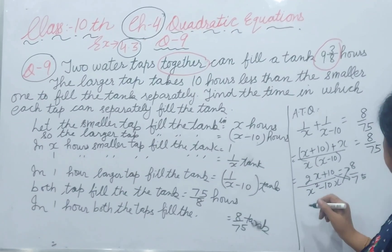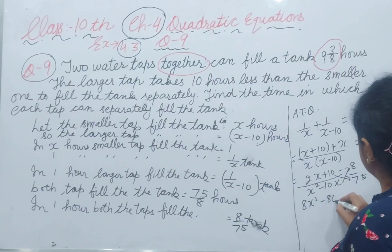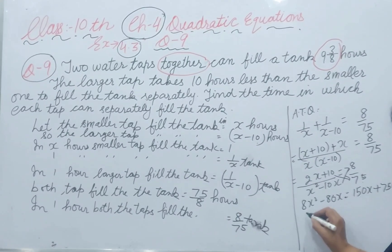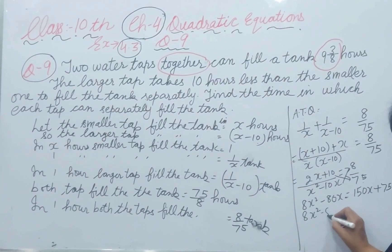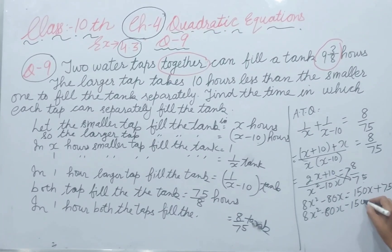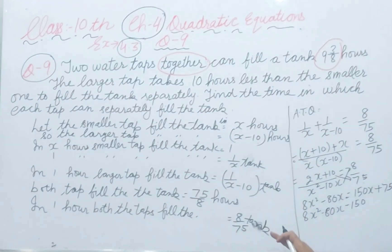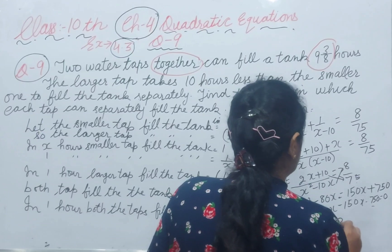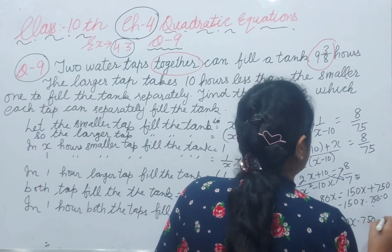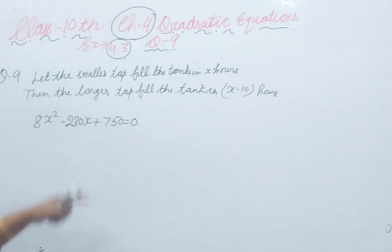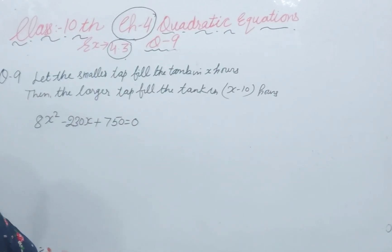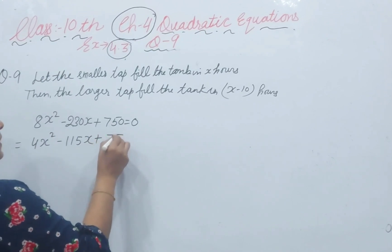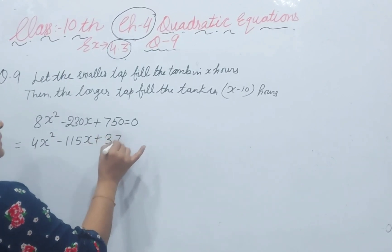Cross multiplying and simplifying, we get 8x squared minus 230x plus 750 equals 0. Dividing the whole equation by 2 gives us 4x squared minus 115x plus 375 equals 0.